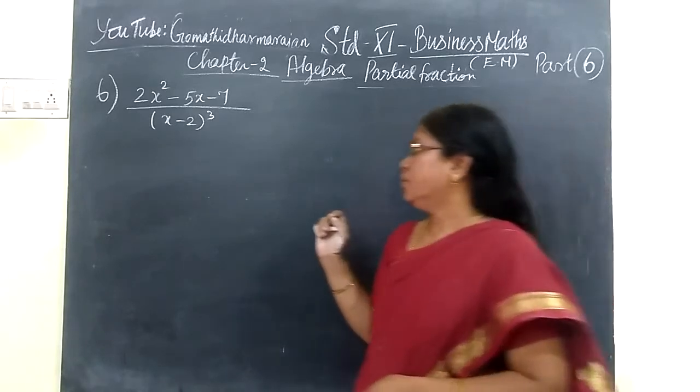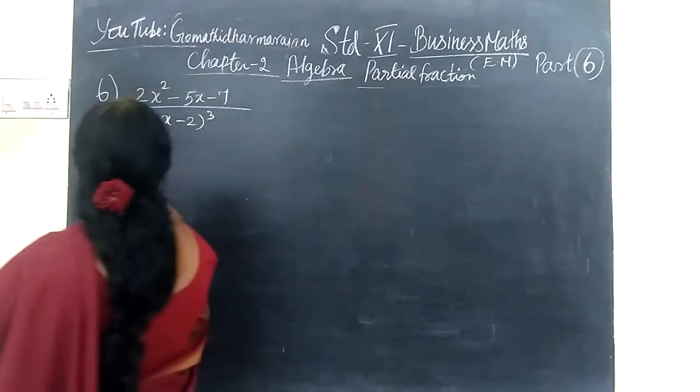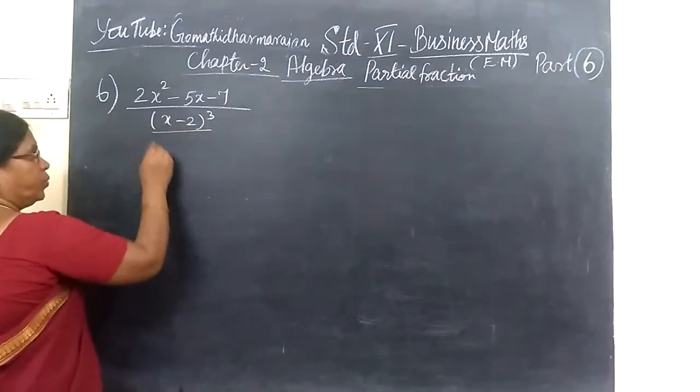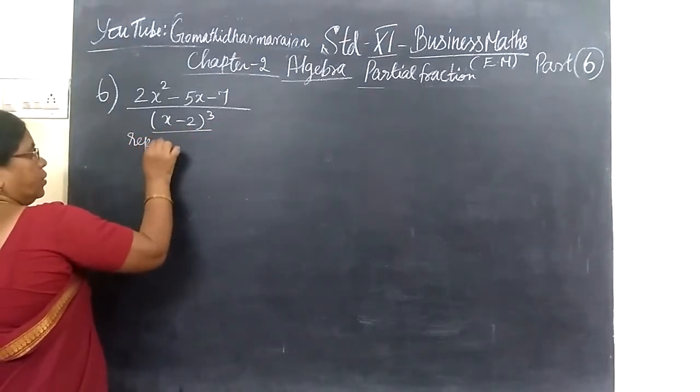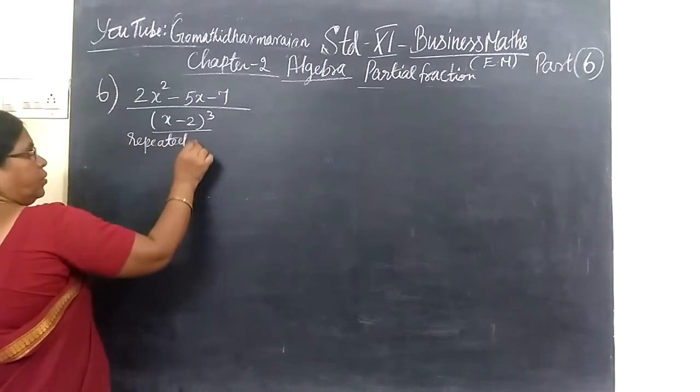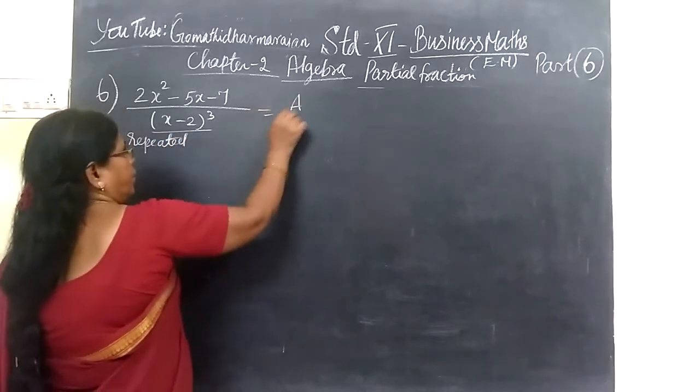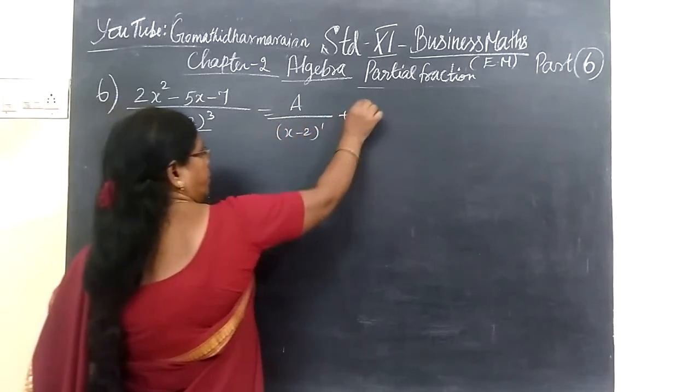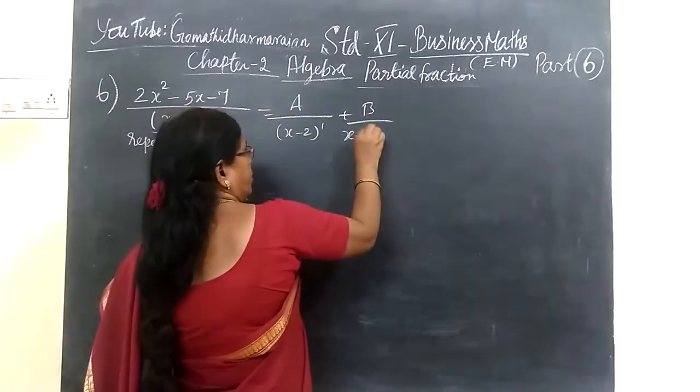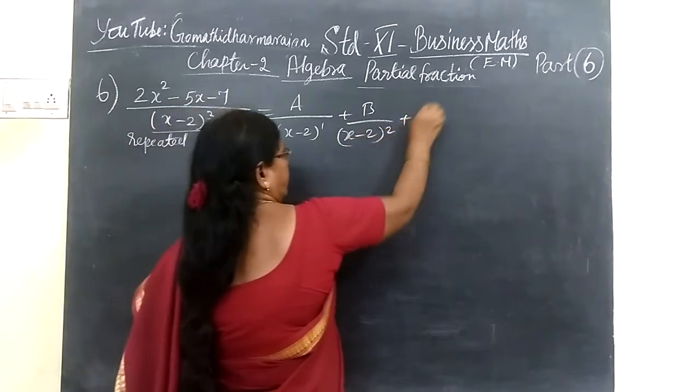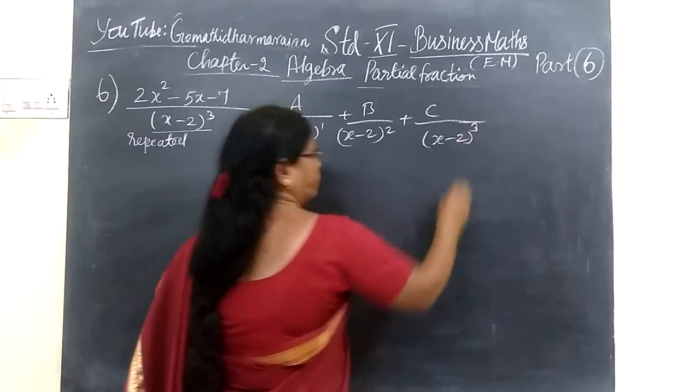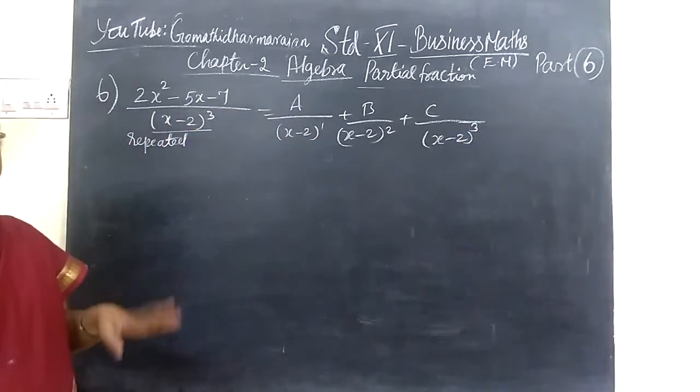Path is constant. And here you see the denominator is x minus 2 whole 0. Then we repeat it, so repeat it is enough. You can write A by first factor, then plus B by second factor, then C by third. So power 1, power 2, power 3.